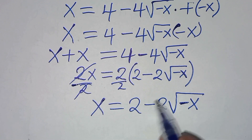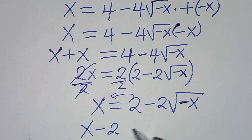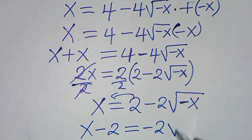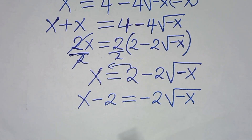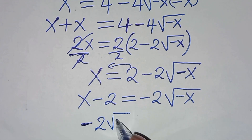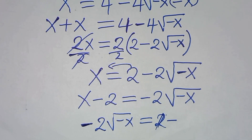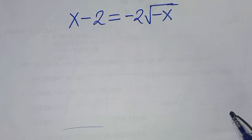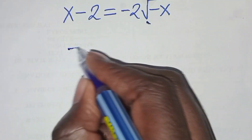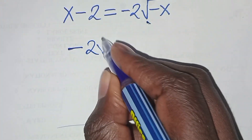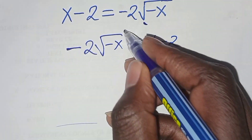The next step: we take 2 to the left hand side so that we have x minus 2 equals negative 2 square root of minus x. We can write this as minus 2 times square root of minus x equals x minus 2.